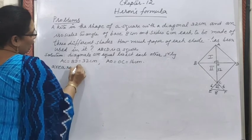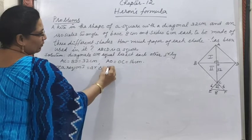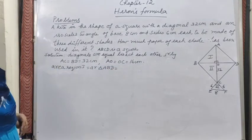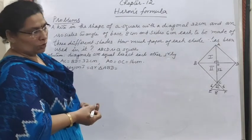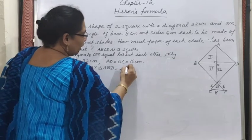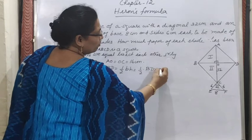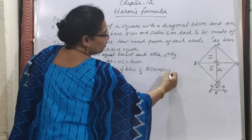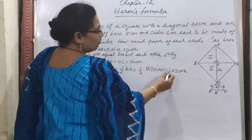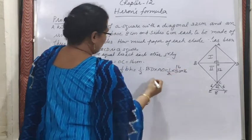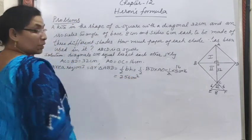Area of Region 1 = area of triangle ABD. Since we know the base and height, we use the formula ½ × base × height = ½ × BD × AO = ½ × 32 × 16 = 256 cm².